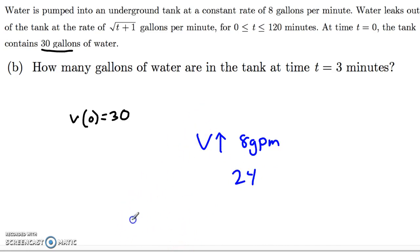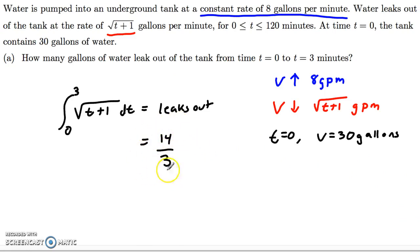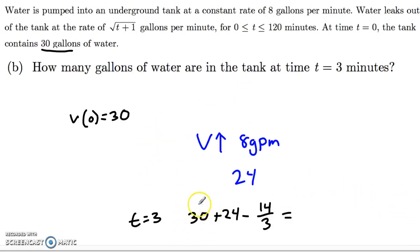And the total amount of water at time equals 3 is going to be simply 30 plus 24 minus the 14 thirds that leaked out in the beginning. So remember, in part A, we found that in the first 3 minutes, 14 thirds leaks out of the pipe. In part B, we know that we started with 30, 24 gallons went in from this 8 gallon per minute pump, but we've got to take out that 14 thirds from the leaking, and that'll leave us with a grand total of 148 over 3 gallons in the tank.